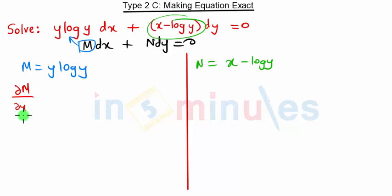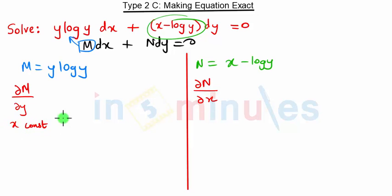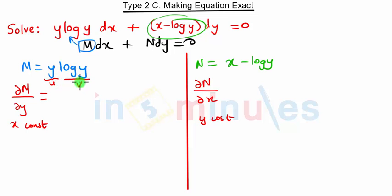For ∂M/∂y, x is constant, and for ∂N/∂x, y is constant. The derivative of y·log(y) requires the u·v product rule. The u·v rule states that the derivative equals derivative of u times v, plus u times derivative of v.